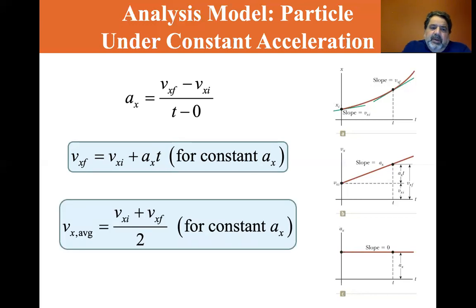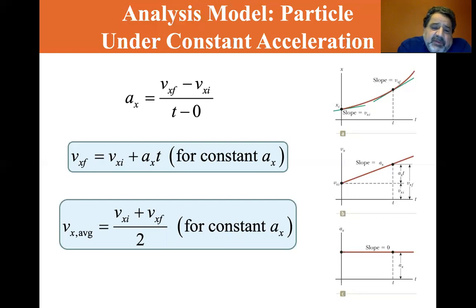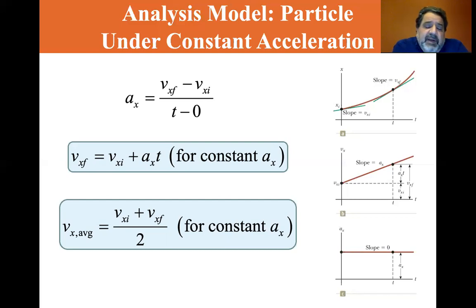Now the average velocity is the initial velocity plus the final velocity, divided by two. That's just an average. If you have two values — say a 90 and a 100 — you take 90 plus 100, get 190, divided by two, you get 95. So the initial velocity plus the final velocity divided by two gives you your average velocity for constant acceleration.